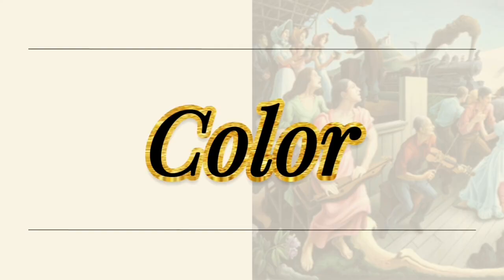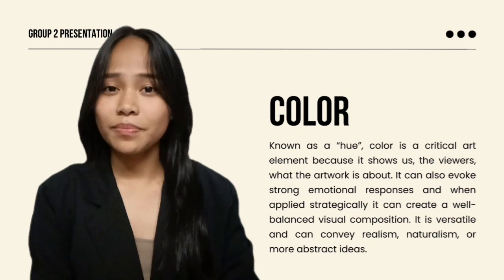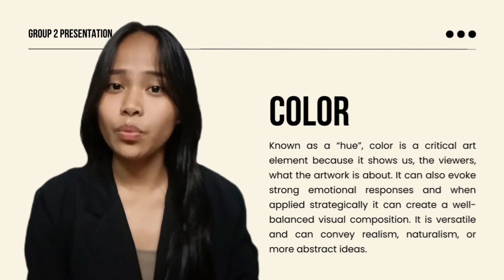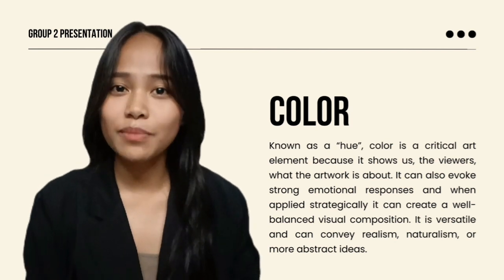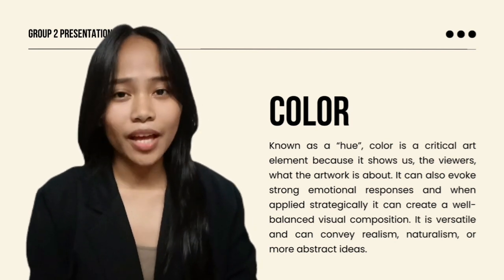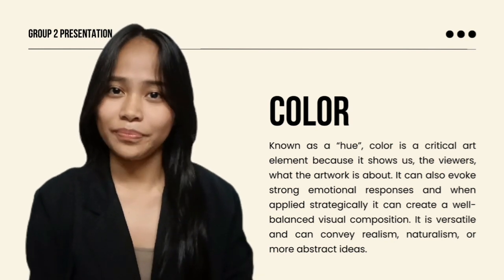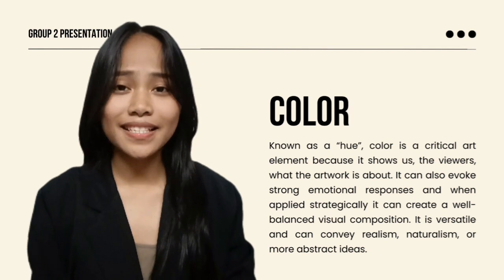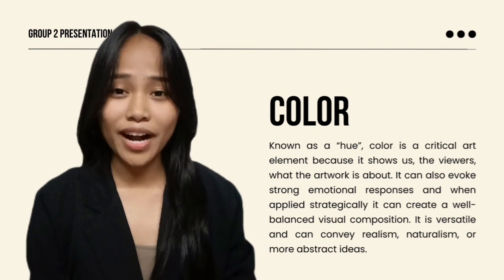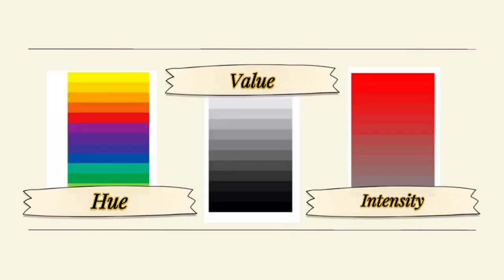The first element of art is color. Color is a critical art element because it shows us, the viewers, what the artwork is about. It can also evoke strong emotional responses, and when applied strategically, it can create a well-balanced visual composition. It is versatile and can convey realism, naturalism, and more abstract ideas. Each color has three properties: hue, value, and intensity.